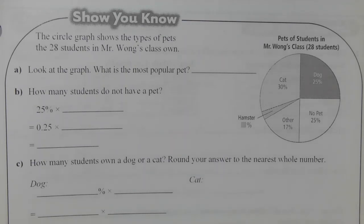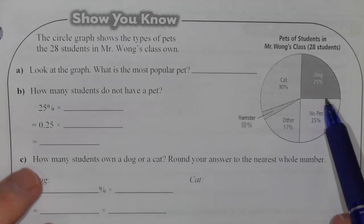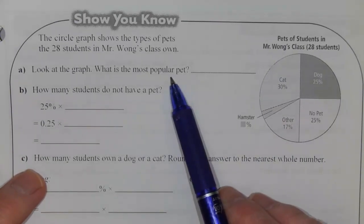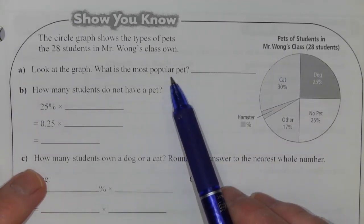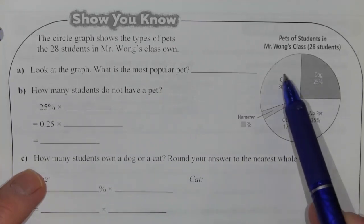First question, look at the graph, what is the most popular pet? We're going to look at the circle graph. The most popular pet is going to be the largest piece in that circle graph, which if you look here,